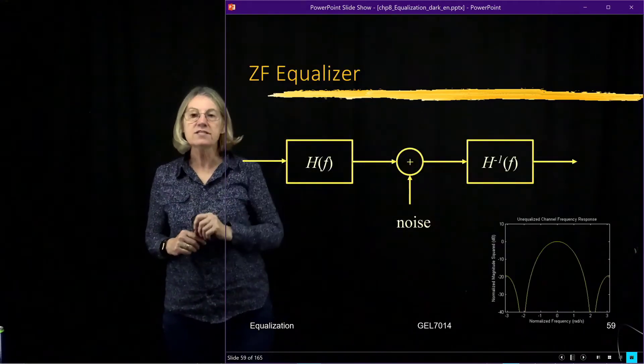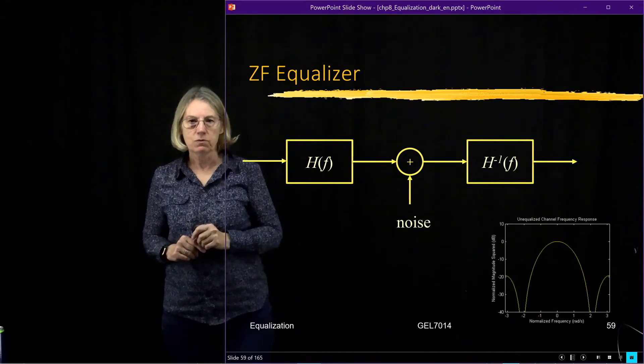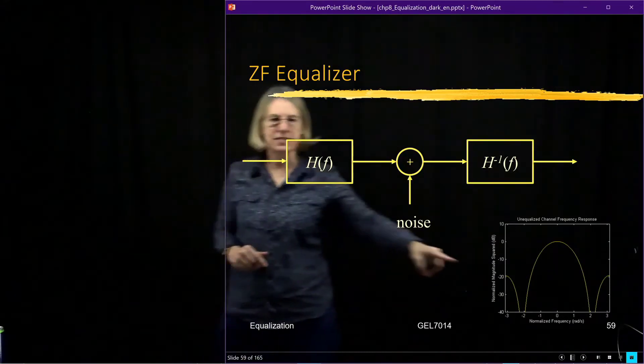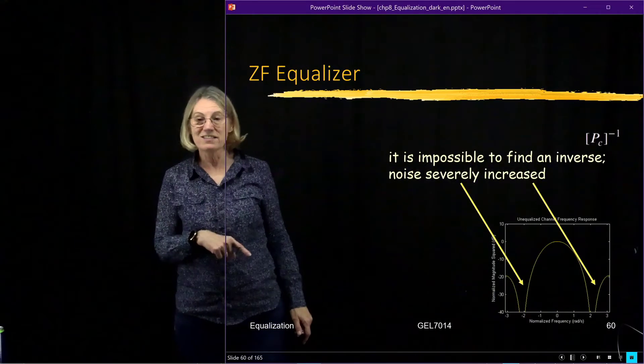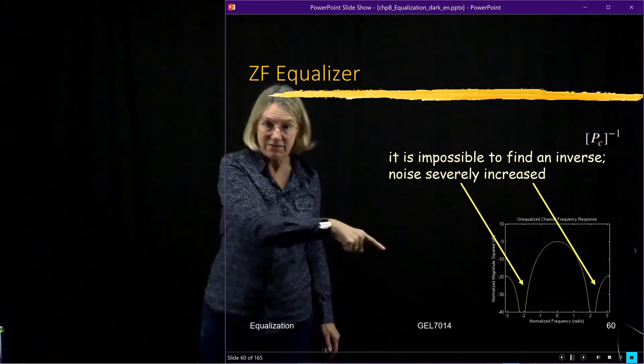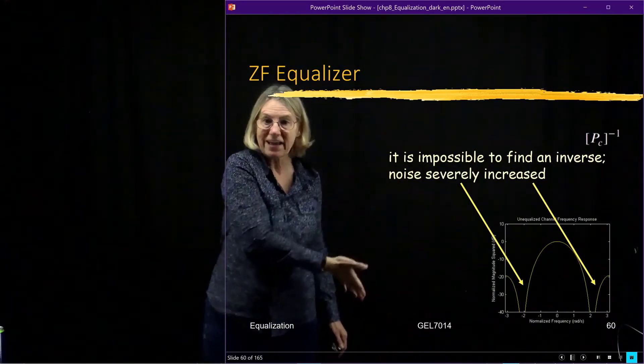Now let's look at this channel which has deep fades. Well in the ones of the deep fades, zero forcing equalizer is not even going to be able to find an inverse because I'm dividing by zero, so I can't really find an inverse.